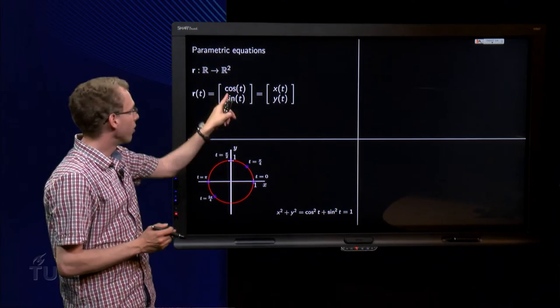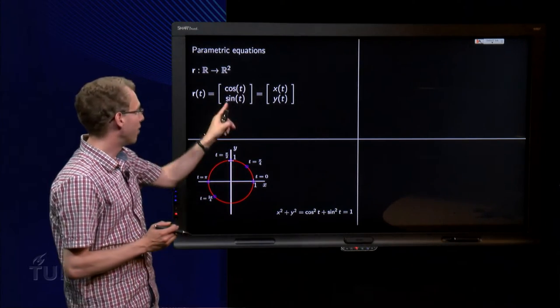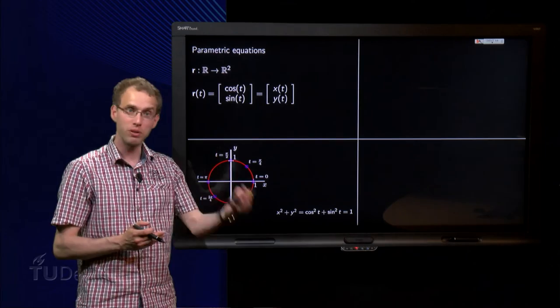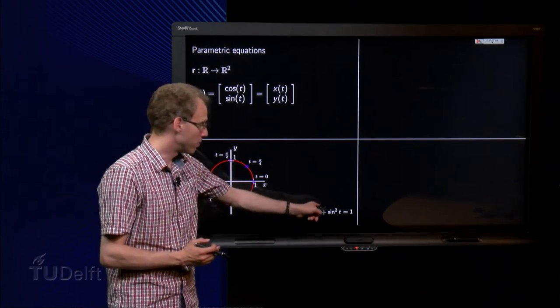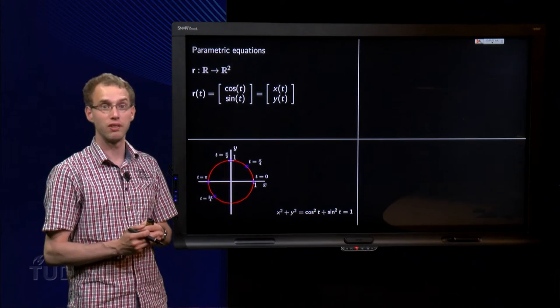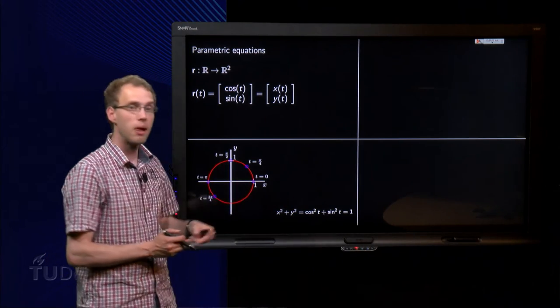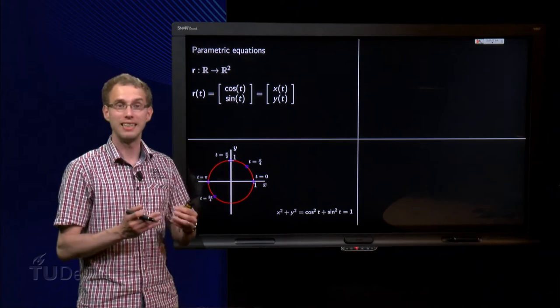Well, how can we check that? Well, we know x equals cos(t) and y equals sin(t). So if we compute x² plus y² over here, we get cos²(t) plus sin²(t) equals 1 for all values of t. So that means that all points (x,y) indeed lie on a circle.